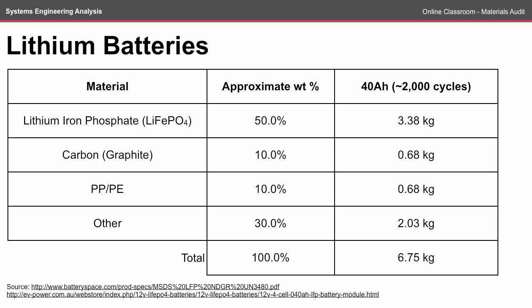Looking at the material safety data sheet of different types of batteries, the lithium ion phosphate battery is a popular battery for electric vehicles. In that chemistry, approximately half of the weight is in the lithium ion phosphate chemistry. Lithium batteries are typically fairly light, coming in under 7 kilograms, and the new batteries promise 2,000 cycles.